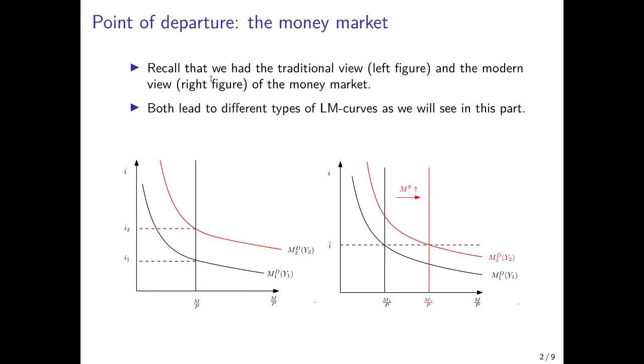First, we briefly recall the money market as we had it previously. We had the traditional view that's depicted in the left figure and the modern view depicted in the right figure. According to the traditional view, the initial equilibrium is where fixed money supply intersects with fixed money demand. So we have an interest rate I1 and money supply M bar divided by P is then the real money supply.